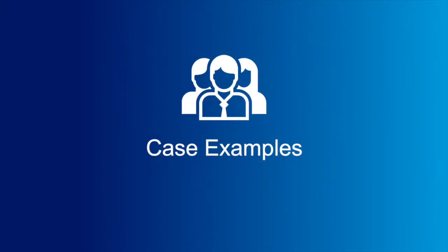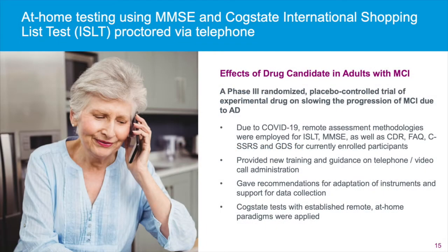During the COVID-19 pandemic, many ongoing studies have required rapid adaptation to prevent missing data. Here at CogState, we have been able to support by providing new training and guidance on telephone or video call administration, recommendations to adapt instruments, and also support for data collection and analysis. This has included identifying instruments well suited to adaptation, providing best practice for test environment and conduct, and differentiation of remote versus in-clinic data. Additionally, CogState tests with established remote at-home paradigms have also been applied.